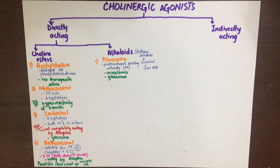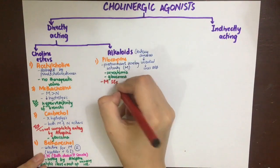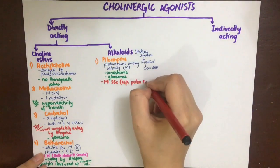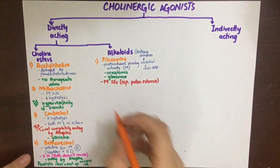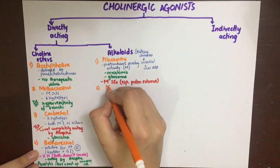Pilocarpine can also be used in the screening test for cystic fibrosis, because in that test we need to check the chloride concentration in sweat. Since pilocarpine has increased secretory activity, it can be used for that purpose. Side effects are of course due to its muscarinic agonist activity, with the main side effect being pulmonary edema on systemic therapy.